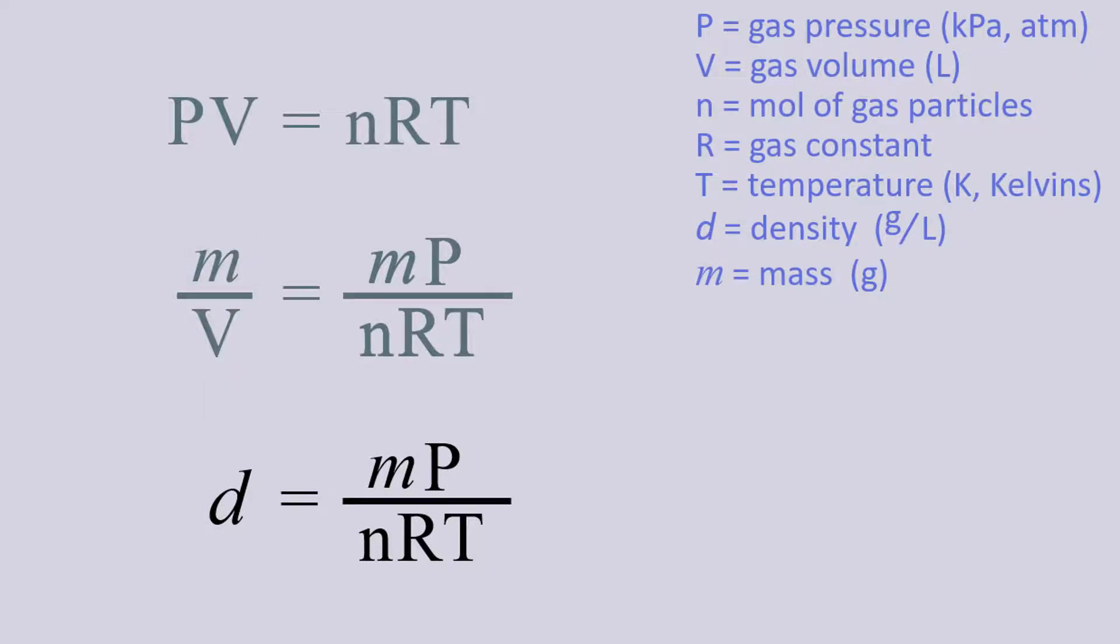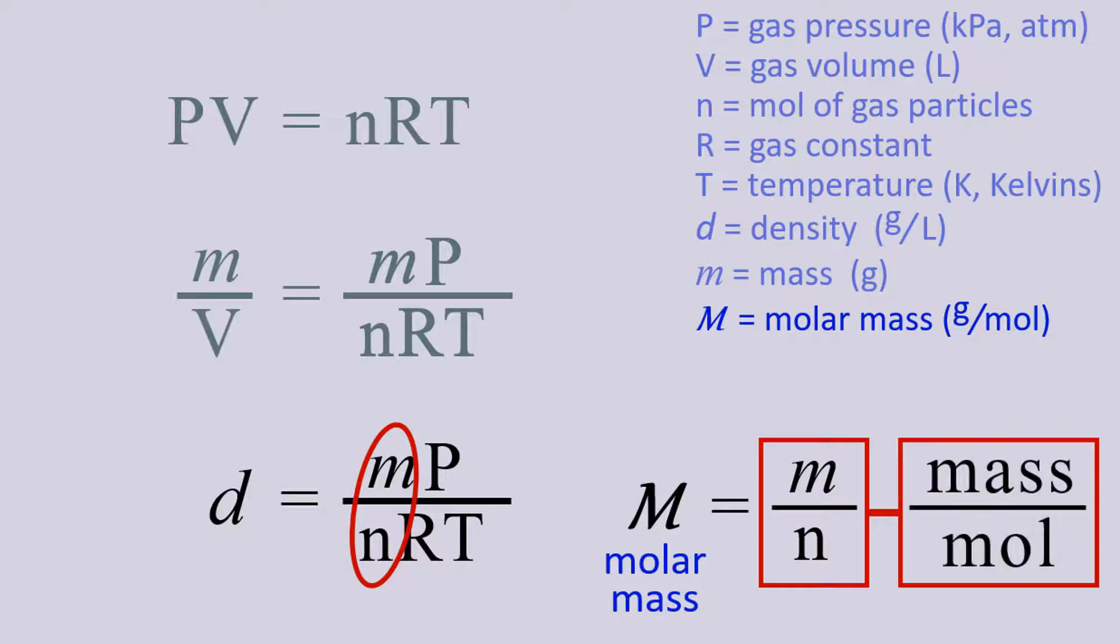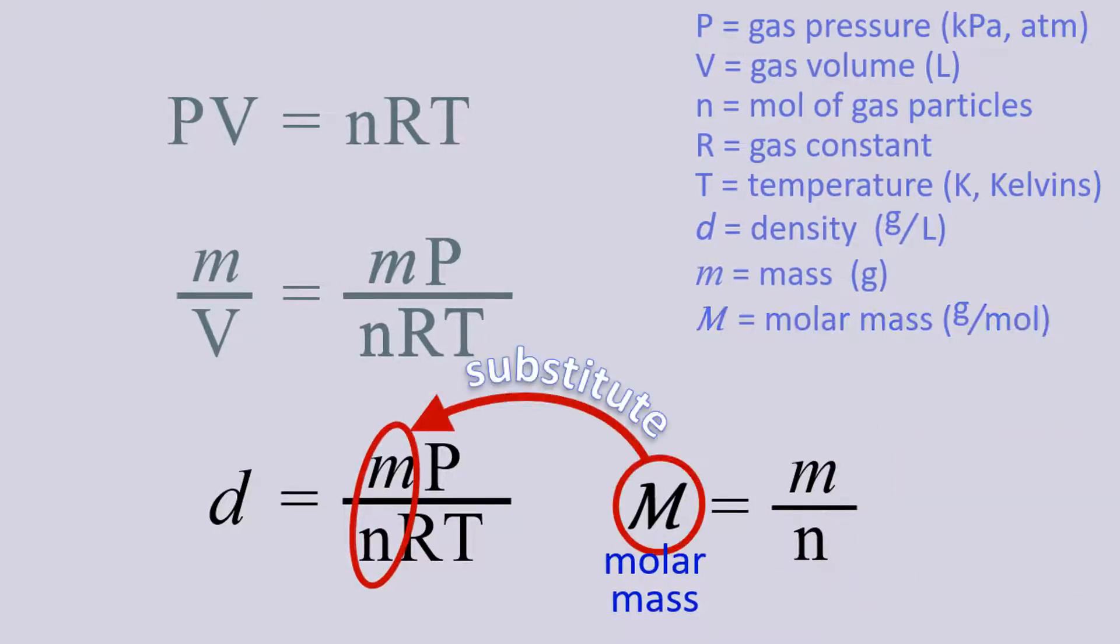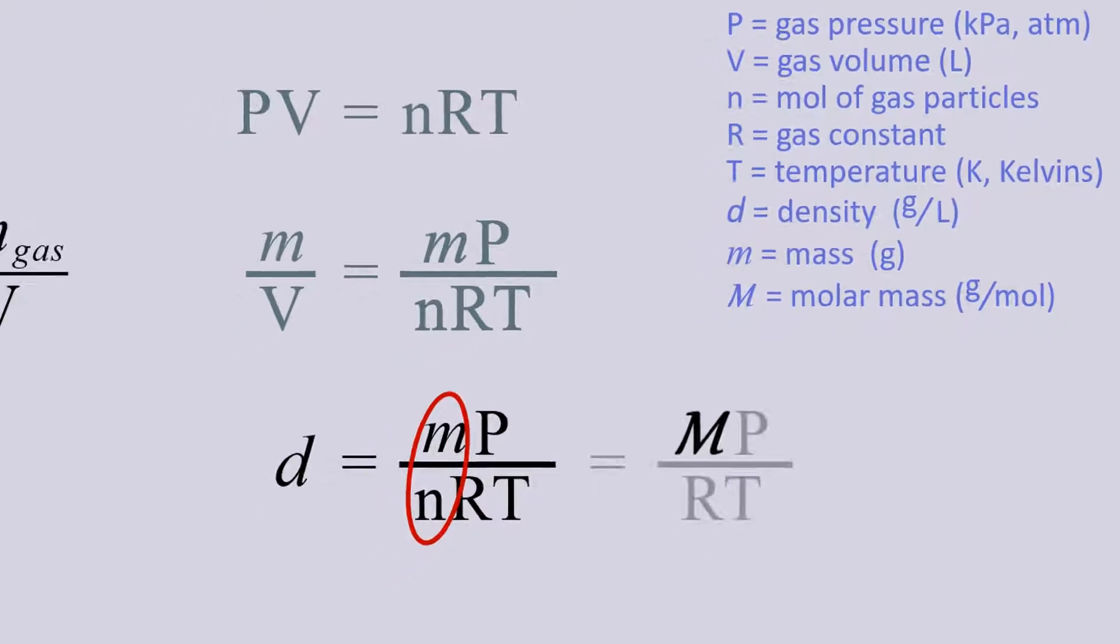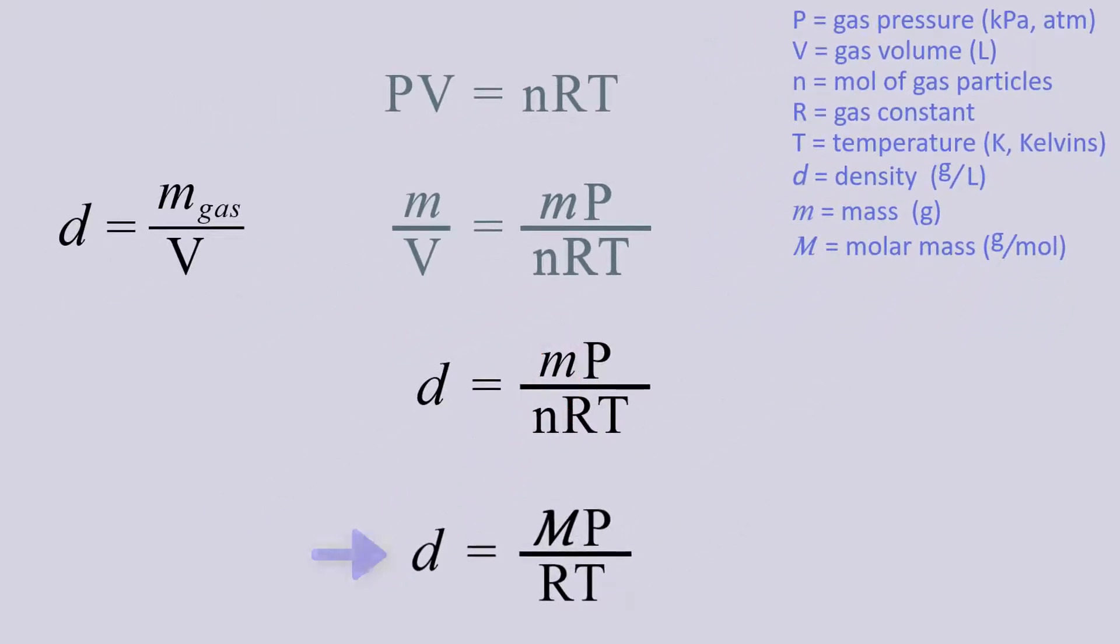This presents something very interesting because mass over moles is molar mass. And we can then substitute molar mass for mass over n in the equation to get density equals molar mass times pressure divided by RT.